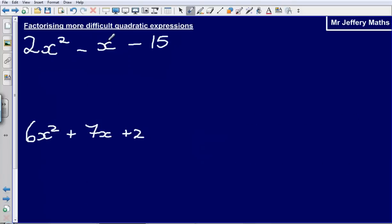In the previous video we looked at factorising expressions where it was just x squared at the beginning. What makes these more difficult is the fact that we've now got the coefficient for x squared, so the number in front of the x squared, greater than 1.